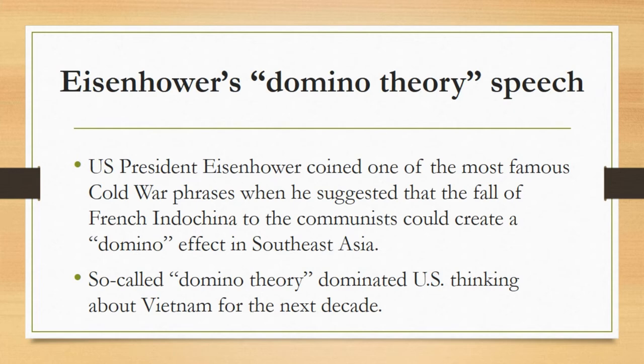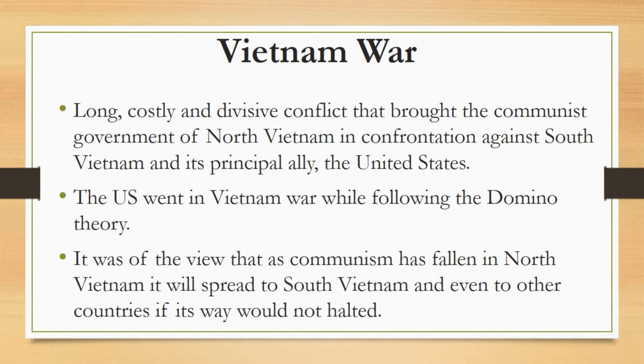Vietnam War: Vietnam is a country in Southeast Asia, bordered by China, Laos, and Cambodia. The war fought in Vietnam is called the Vietnam War. In September 1945, Vietnam's nationalist leader Ho Chi Minh proclaimed Vietnam's independence from France, beginning a war that pitted Ho's communist-led Viet Minh regime in North Vietnam against a French-backed regime in South Vietnam.